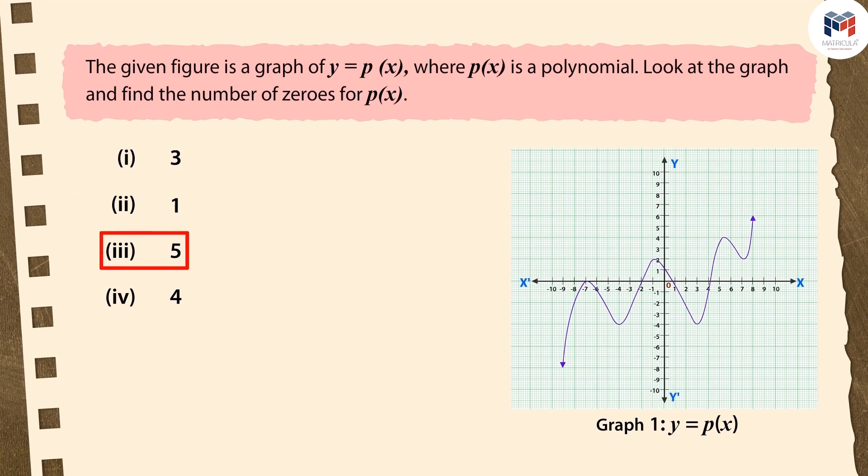If you have chosen the third option, that too is not correct. Along with the points of intersection on the x-axis, you have counted the point of intersection on the y-axis.